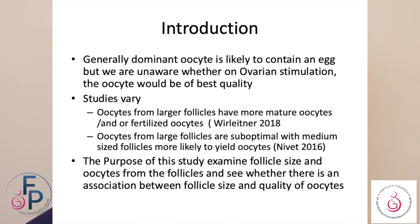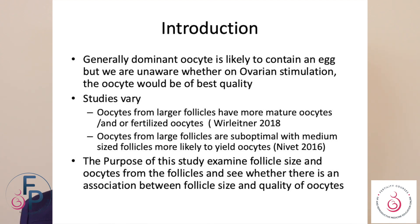So what do we know? We know that generally the dominant follicle is likely to contain an egg, but we are unaware of whether, during ovarian stimulation, oocyte quality would be at its best. Studies vary — some showing that oocytes from larger follicles may be more mature and more fertilized, while others show that large follicles are suboptimal, with medium-sized follicles sometimes yielding better oocytes.